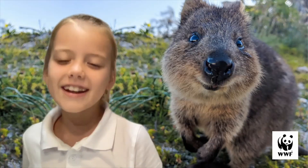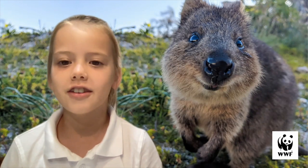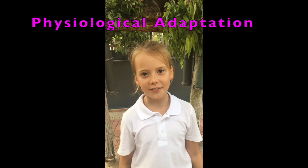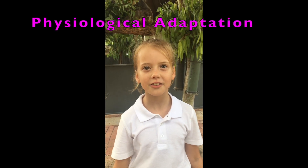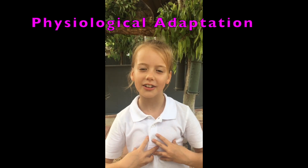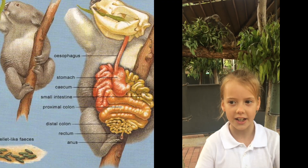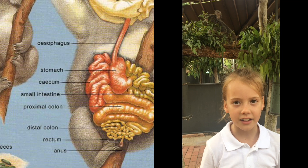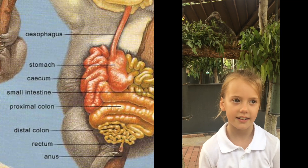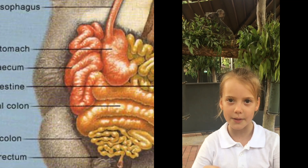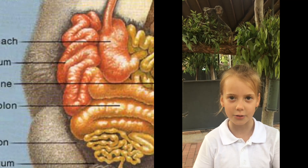There are three different types of adaptations. A physiological adaptation is the way an animal changes on the inside, like changes in the cells and chemicals. Do you see this koala? It has adapted to eating poisonous gum leaves by having a huge cecum containing lots of bacteria that helps break down the leaves, making it easier to absorb.